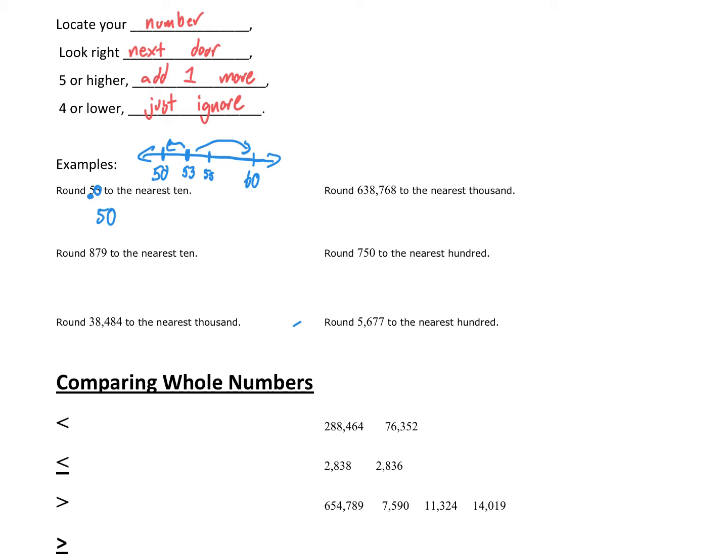If it's exactly a five, 55, yeah, it would be exactly between 50 and 60. We have decided in math that we round up if it's in the exact middle.